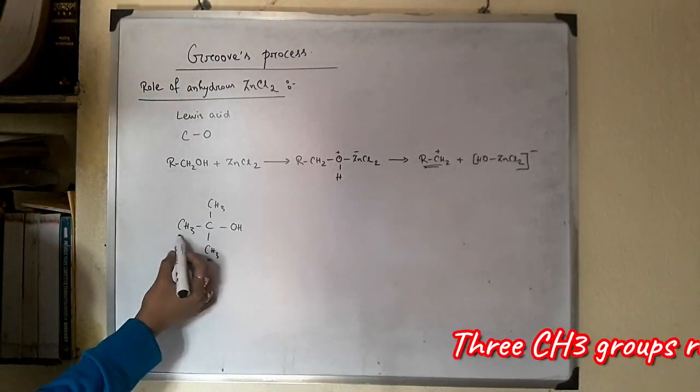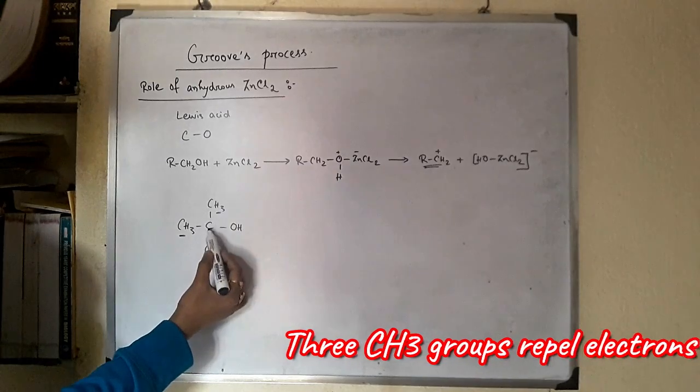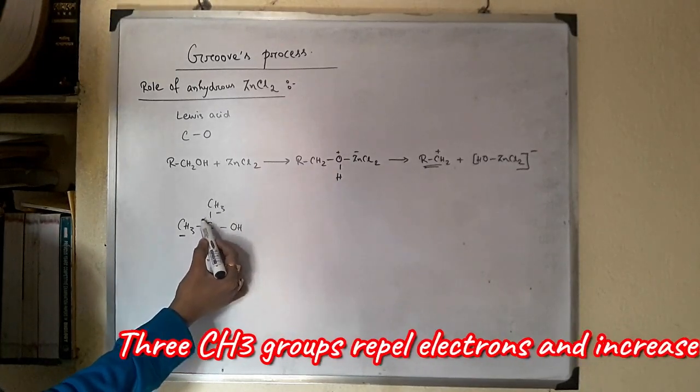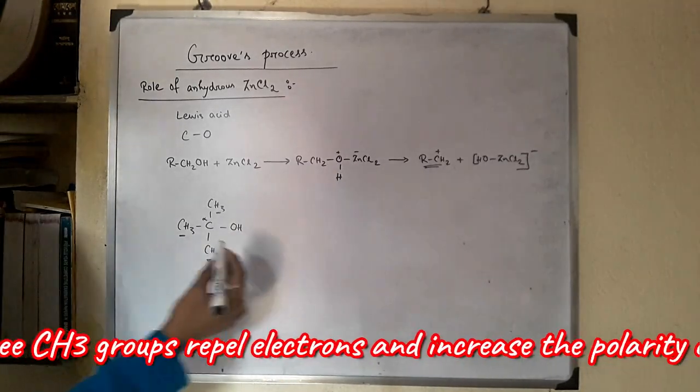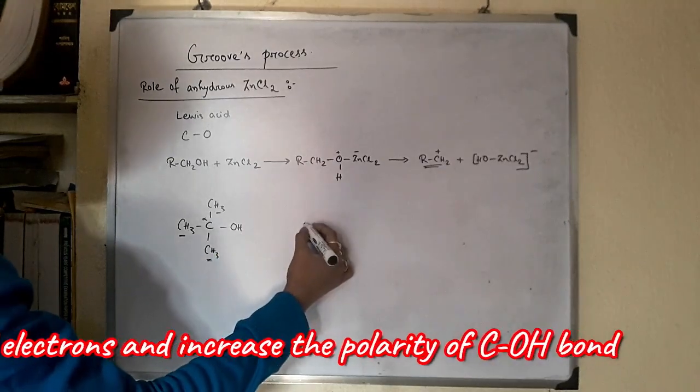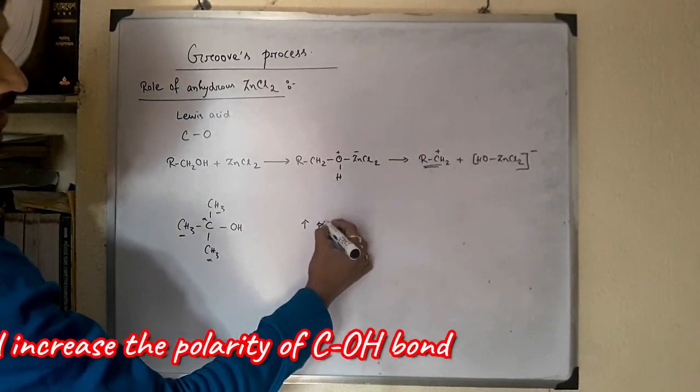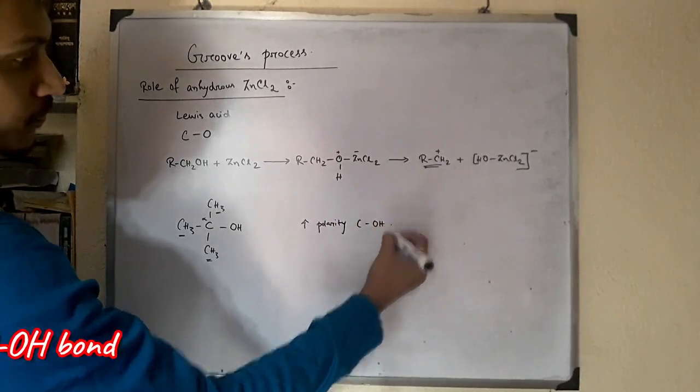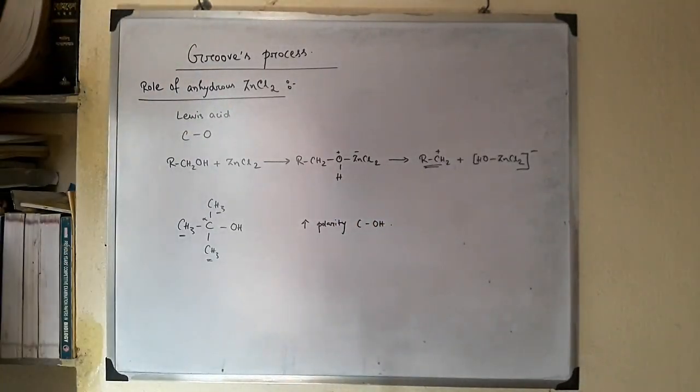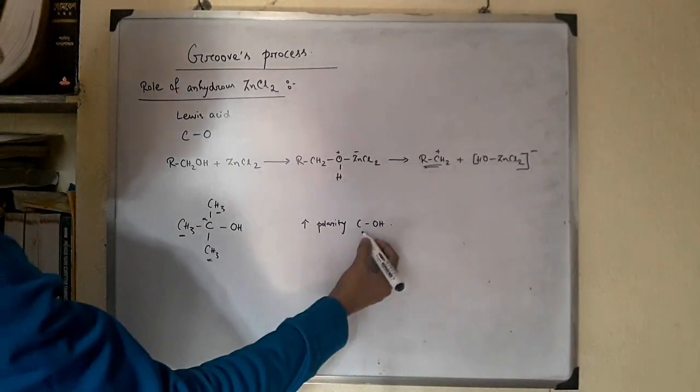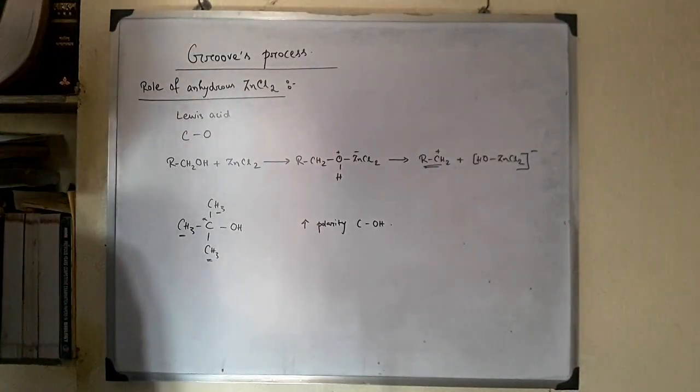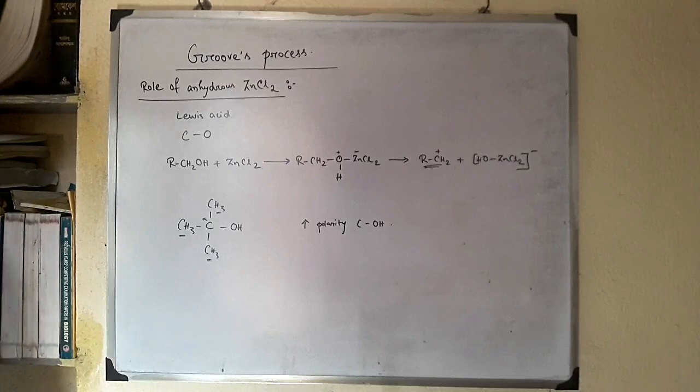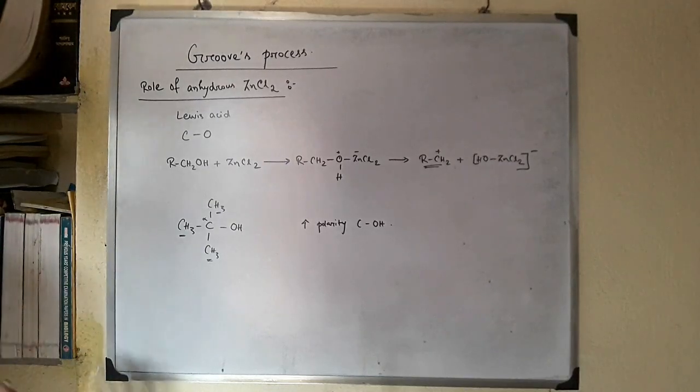Because there are three electron repelling groups on the alpha carbon that increase the polarity of the C-OH bond. As a result, this carbon-oxygen bond becomes easy to break and the reactivity increases.